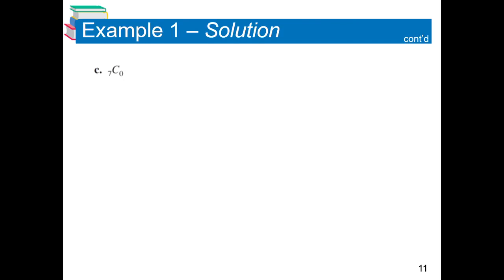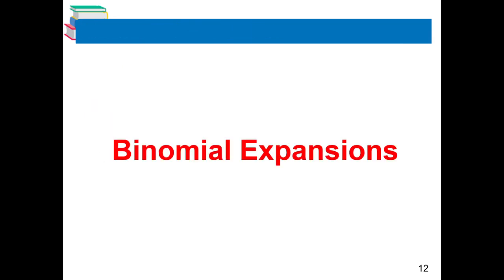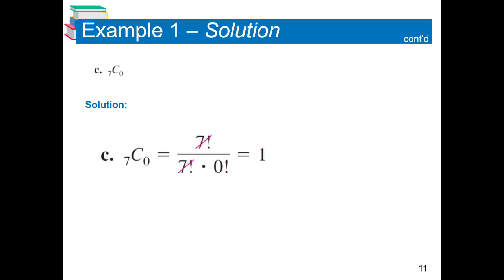When you immediately see something like 7C0, the answer is 1 right away. Because 7!/7! = 1, and 0! is always 1. So 7C0 = 1.